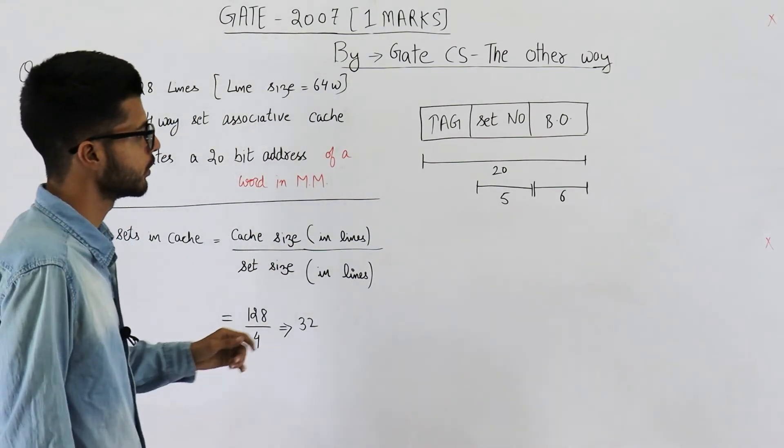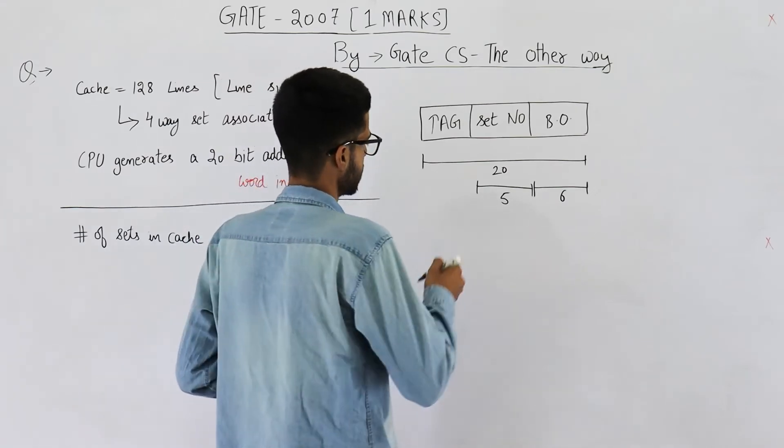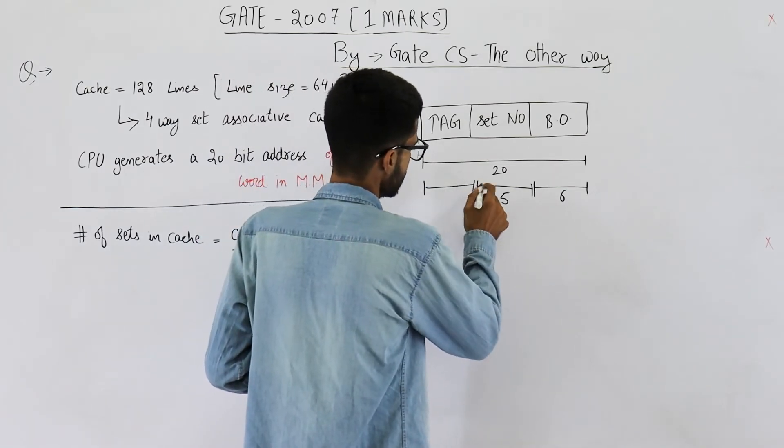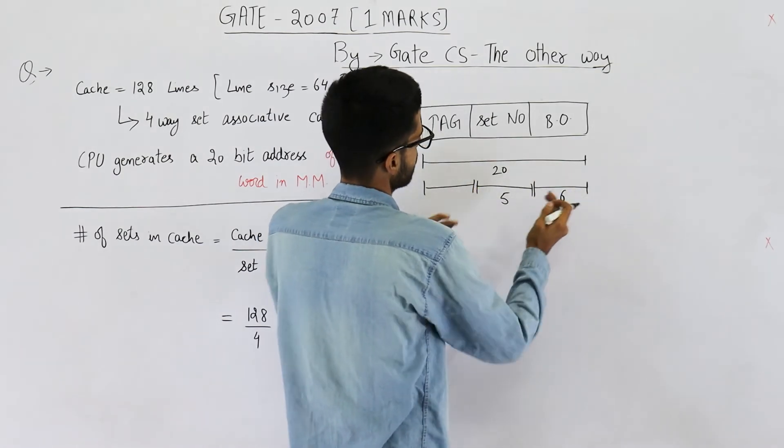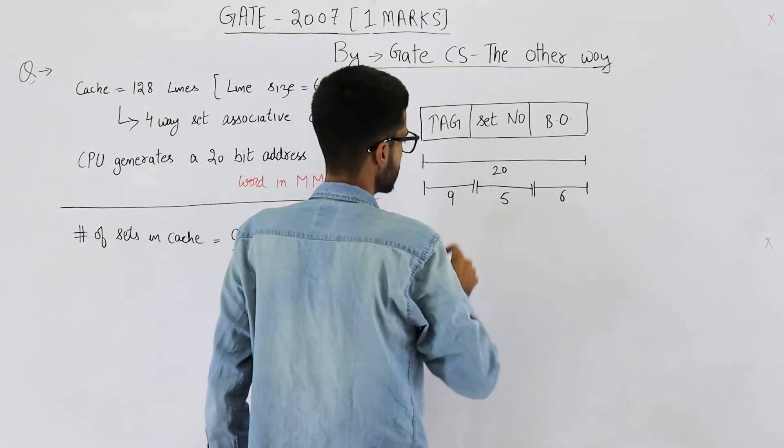Then you need to find the tag bits. It's easy. Just subtract from 20 you subtract 11. So this will be 9 bits.